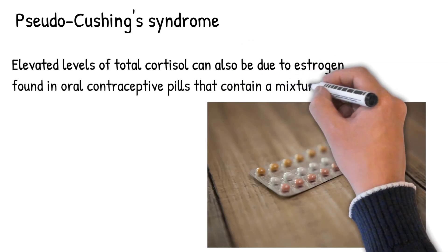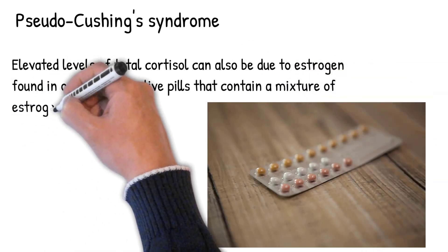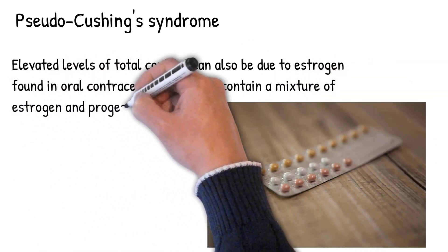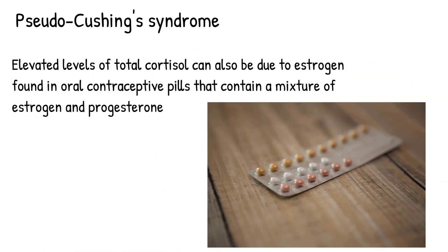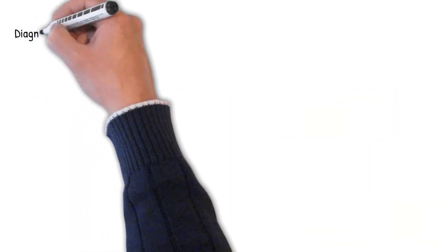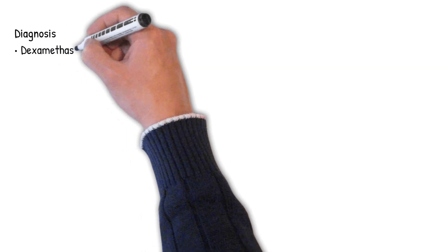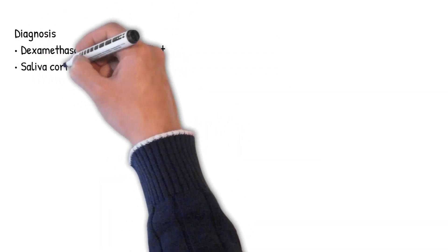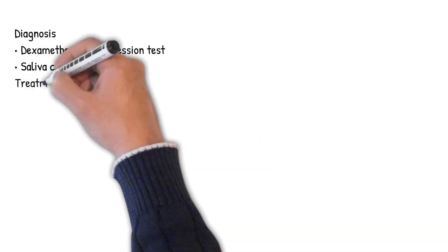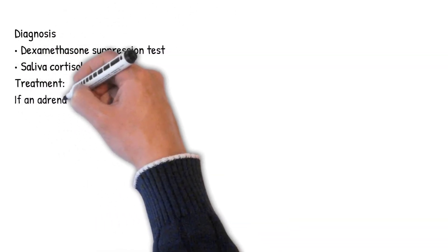Cushing's syndrome can be ascertained via a variety of tests, which include the Dexamethasone Suppression Test and the Saliva Cortisol Level.